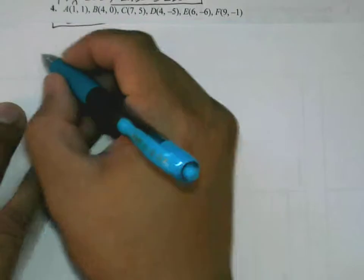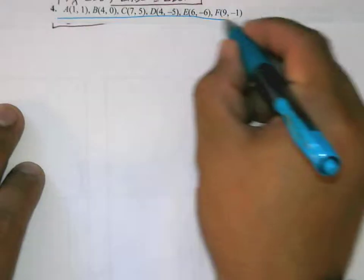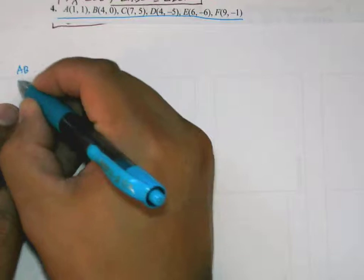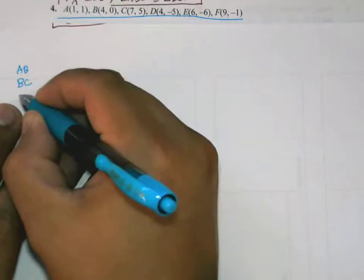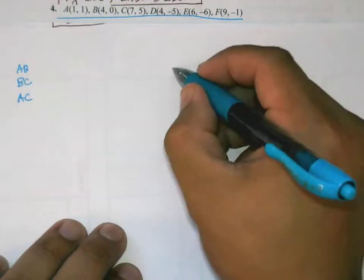This is number 4 and we're going to do basically the same idea. So list out the sides: AB, BC, AC for one set, and DE, EF, and DF for the other.